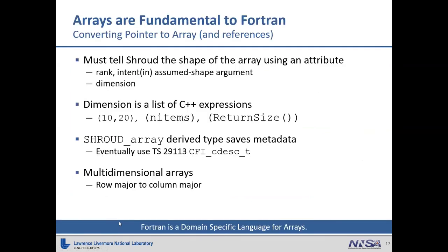Arrays are a very fundamental part of Fortran and very important to high-performance computing. There's a lot of effort spent on how to convert a pointer to an array — C++ references are dealt with similarly. You must tell Shroud the shape of the array using an attribute: either the rank attribute where it's coming from the user, or the dimension attribute where it's coming from the C++ library. You can give explicit shapes — for example, another argument to the function — or some other library function that knows how long the string is. There's a shroud array derived type that has all the metadata, essentially the same thing as the CFI C descriptor type. One big difference to handle is row major versus column major — Shroud has to invert the shape of the array.